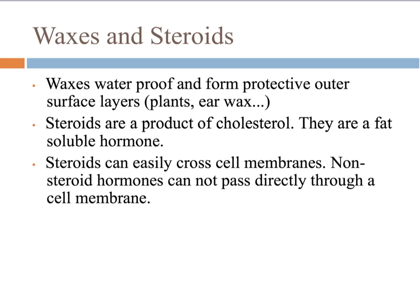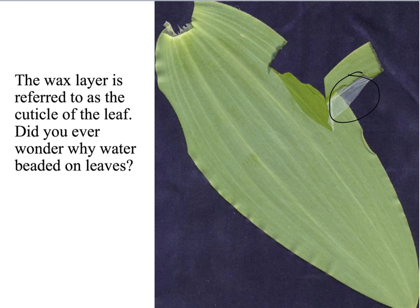Another class of lipids would be waxes and steroids. Waxes make things waterproof, and you can find this on leaves and in your ears, providing a protective outer coating for surface layers. Steroids are a product of cholesterol — a fat-soluble hormone, which means they can be dissolved in other fats. Since a cell is surrounded by a layer of phospholipids, steroids can go in and out of the cell without being regulated, according to a concentration gradient. The layer of wax on the outside of a leaf is why water beads up on a leaf when it rains.